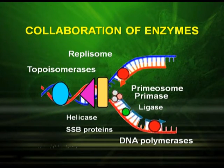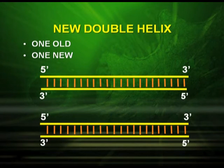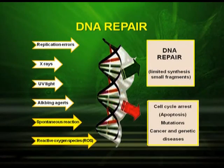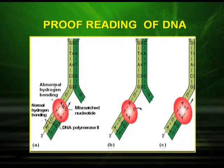This diagram shows the collaboration of the enzymes: topoisomerase, helicase, primase, and ligase. The result is a new double helix with one old and one new strand. Another very important feature is that DNA has an inbuilt repair mechanism — if any mutation occurs in the DNA, it can repair itself, and this process is called the proofreading of DNA.